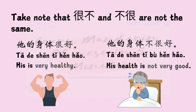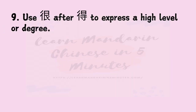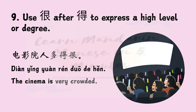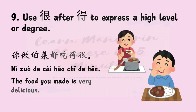Please note that 很不 and 不很 are not the same. Compare: 他的身体很好 means he is healthy, whereas 他的身体不很好 means he is not so healthy. Number nine: use 很 after 得 to express a high level or degree. For example, 菜市场热闹得很 — The market is very lively. 电影院人多得很 — The cinema is very crowded. 你做的菜好吃得很 — The food you made is very delicious.